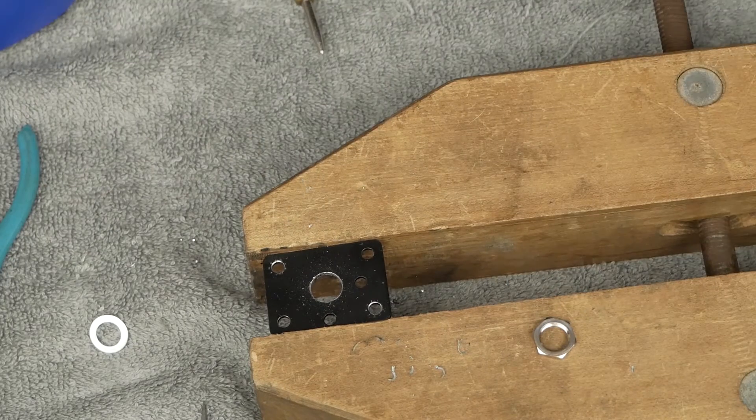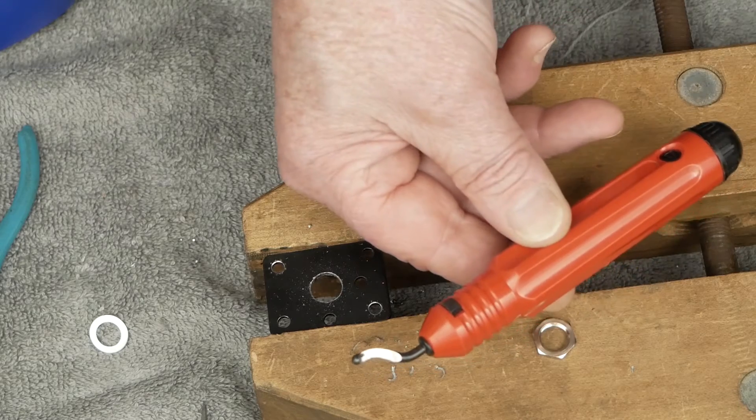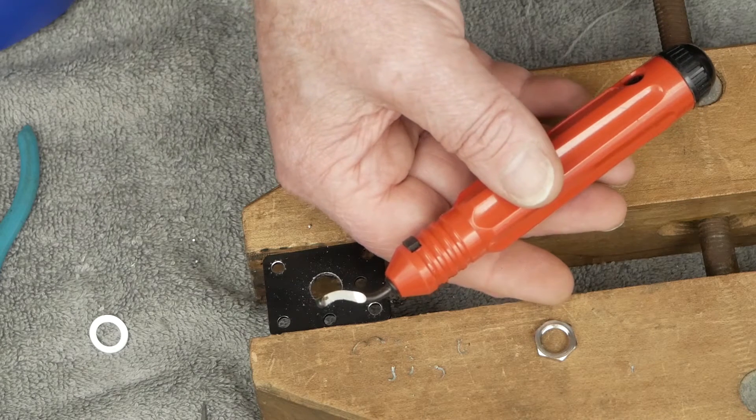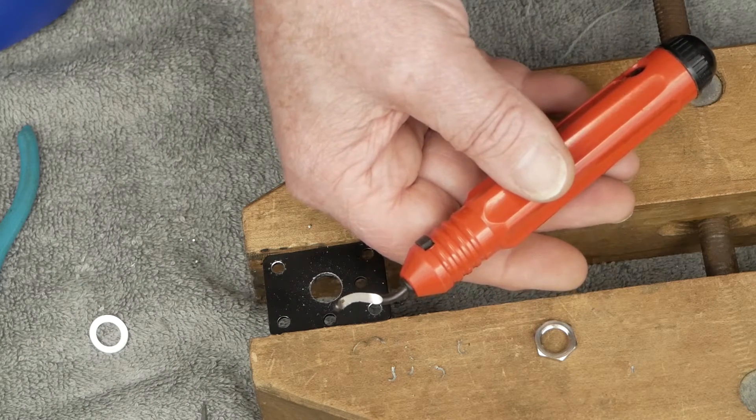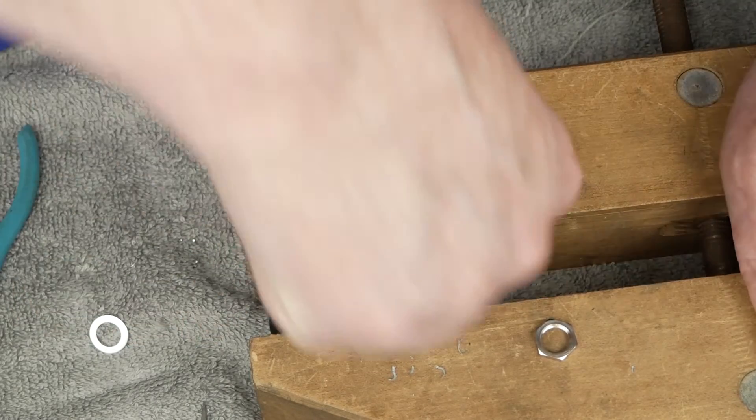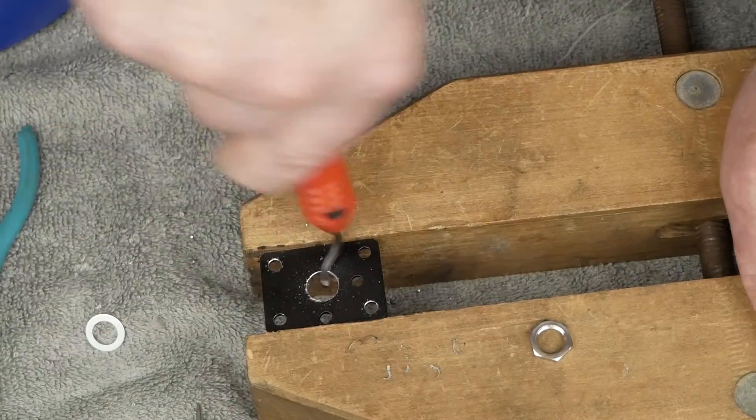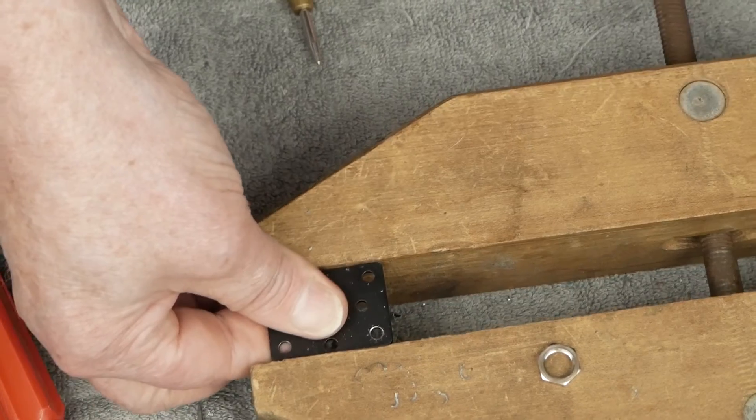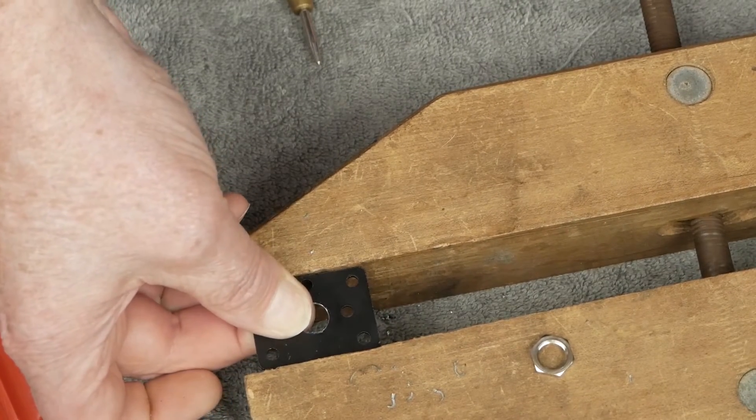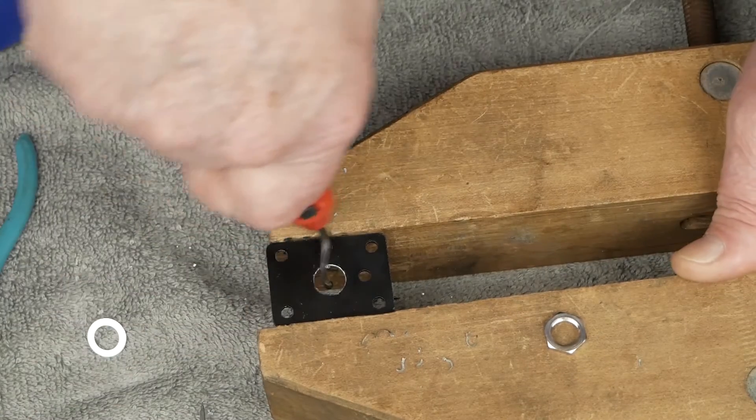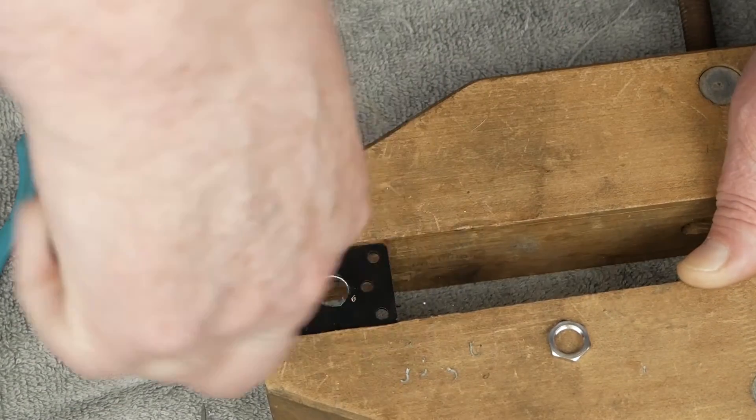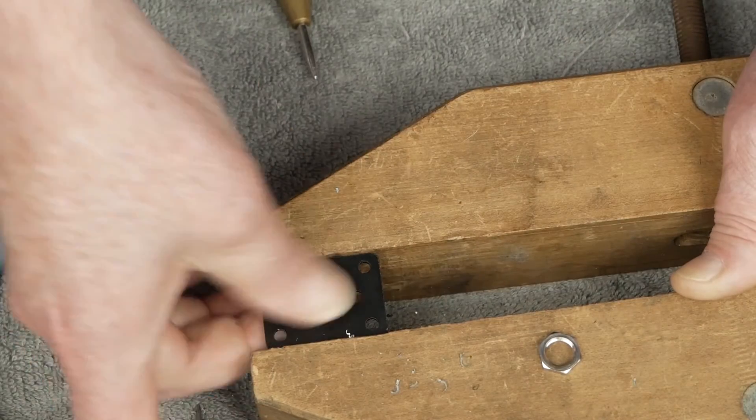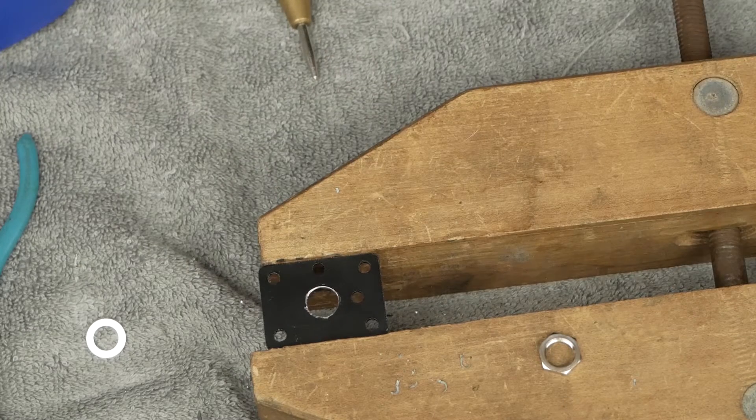Another tool I find super handy is this little deburring tool. I think it's made for deburring the inside of water pipe after you cut it off, that galvanized kind of pipe, but it works great for coming in here. You can come in and do the inside of it. If you don't have one of these tools, you can use a little file works just as well.